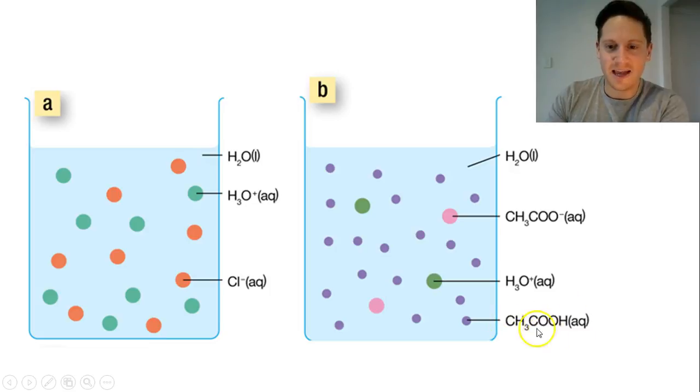So here we've got our acetic acid, CH3COOH. These are the purple particles. Now when they ionise, they'll form the acetate ion, which is in pink, and the hydronium ion in green. So you can see the majority of the acetic acid particles have not ionised. But some of them do. And the fact that some of them do is why it's a weak acid.